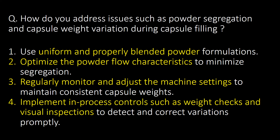How do you address issues such as powder segregation and capsule weight variation during capsule filling? Here are four ways or precautions that can be followed. First, use uniform and properly blended powder formulations. Second, optimize the powder flow characteristics to minimize segregation. Third, regularly monitor and adjust the machine settings to maintain consistent capsule weight. Fourth, implement in-process controls such as weight checks and visual inspections to detect and correct variations promptly.